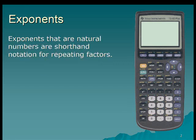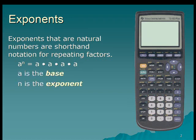Exponents that are natural numbers are shorthand notation for repeating factors. For example, a to the nth power is a times a times a — a is simply a factor n times. a is the base and n is the exponent.